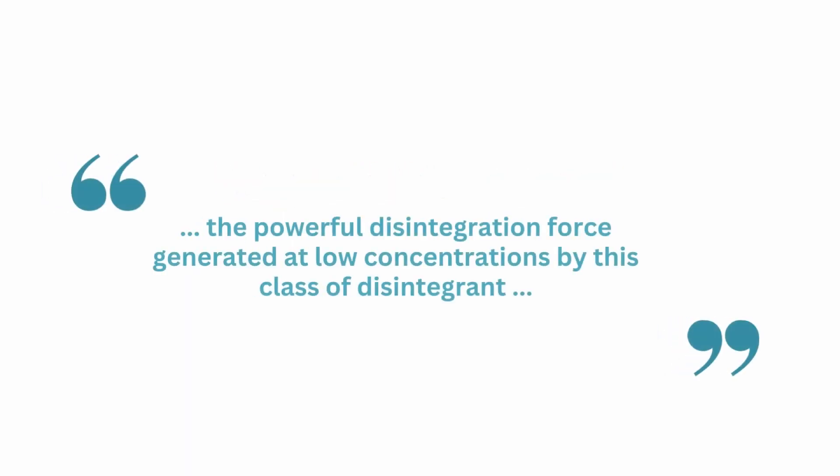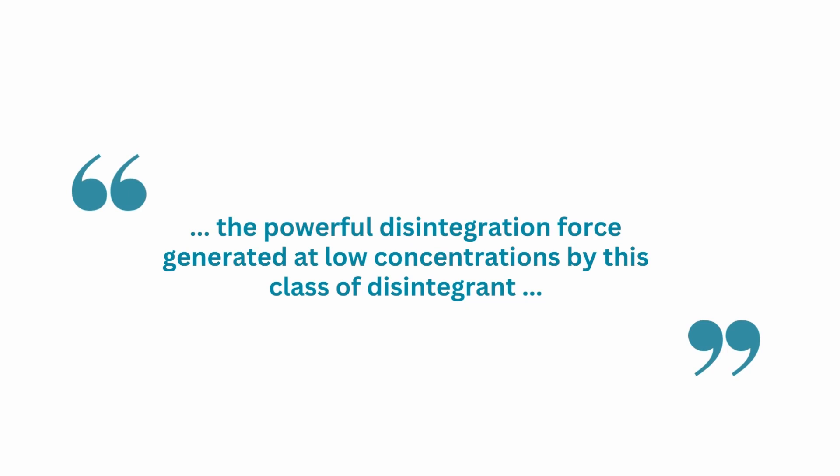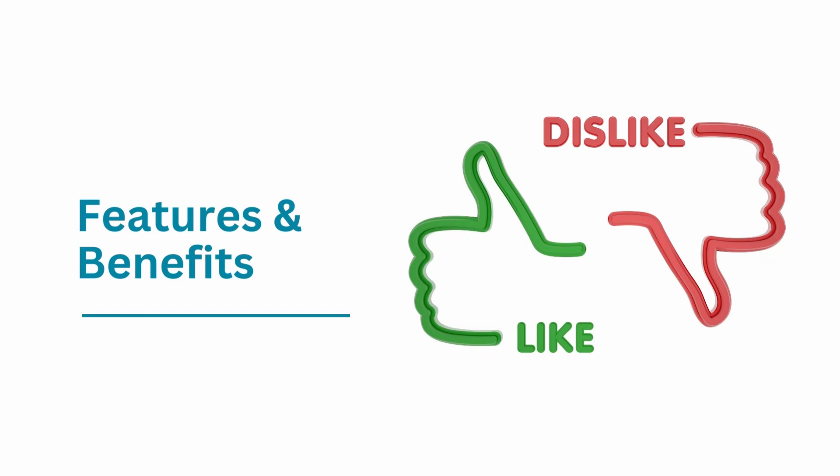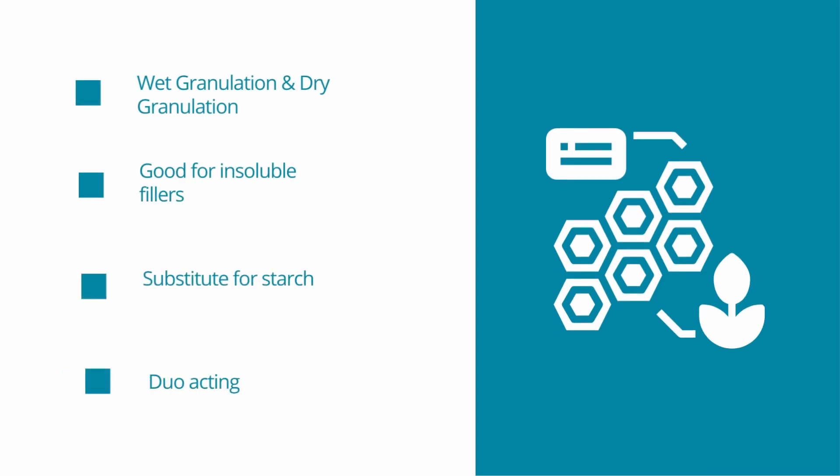The term 'super,' as used in super-disintegrant, was coined in the 1960s. It simply refers to the powerful disintegration force generated at low concentrations by this class of disintegrant when compared to traditional disintegrants like starch. Croscarmellose sodium has several benefits: it is suitable for use in wet granulation, direct compression, and dry granulation; its powerful wicking effect makes it highly effective in formulations containing insoluble fillers such as calcium phosphate, though it works less effectively with slightly soluble and soluble fillers; it is suitable for products where starch use is contraindicated; and it is effective when used intragranularly and/or extragranularly, although for optimum results, 50% should be added intragranularly during wet granulation. It works by attracting water into the tablet pores, followed by swelling.